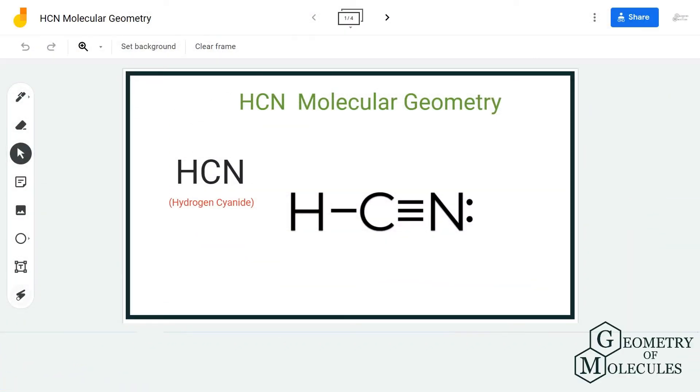Hi guys, welcome back to our channel. In today's video, we're going to help you determine the molecular geometry of HCN molecule. It has the chemical name hydrogen cyanide. To understand its molecular geometry, we're first going to look at its Lewis structure. This is the Lewis structure of HCN, in which the carbon atom is in the center and forms a triple bond with nitrogen atom and a single bond with hydrogen atom.